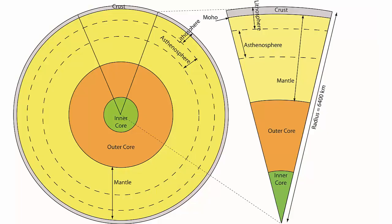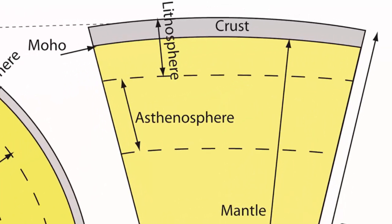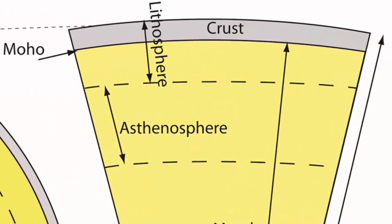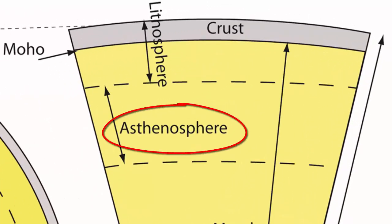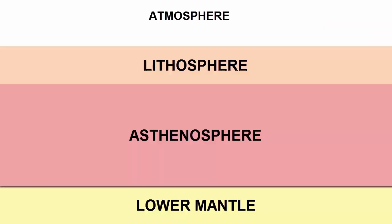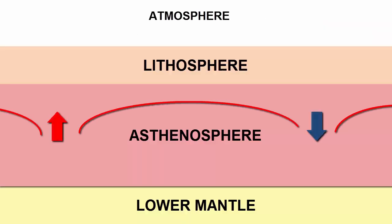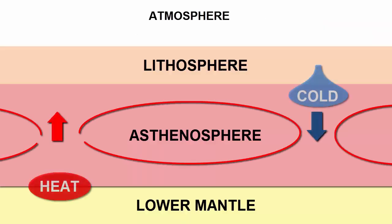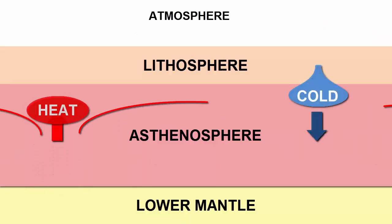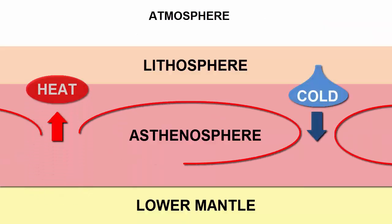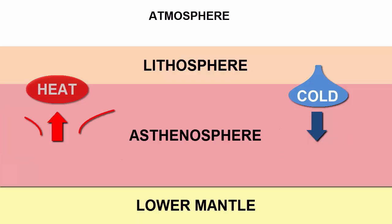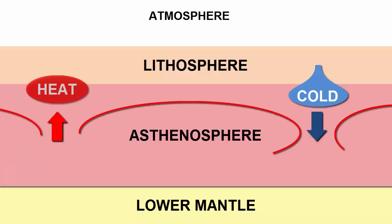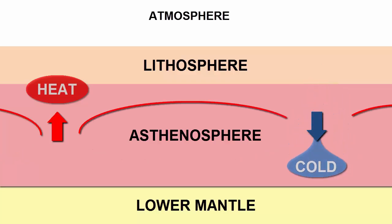To understand plate tectonics, we need to look closely at the convecting asthenosphere. The convecting asthenosphere will cause heat to pile up under certain portions of the lithosphere, and cold material to sink under other parts.